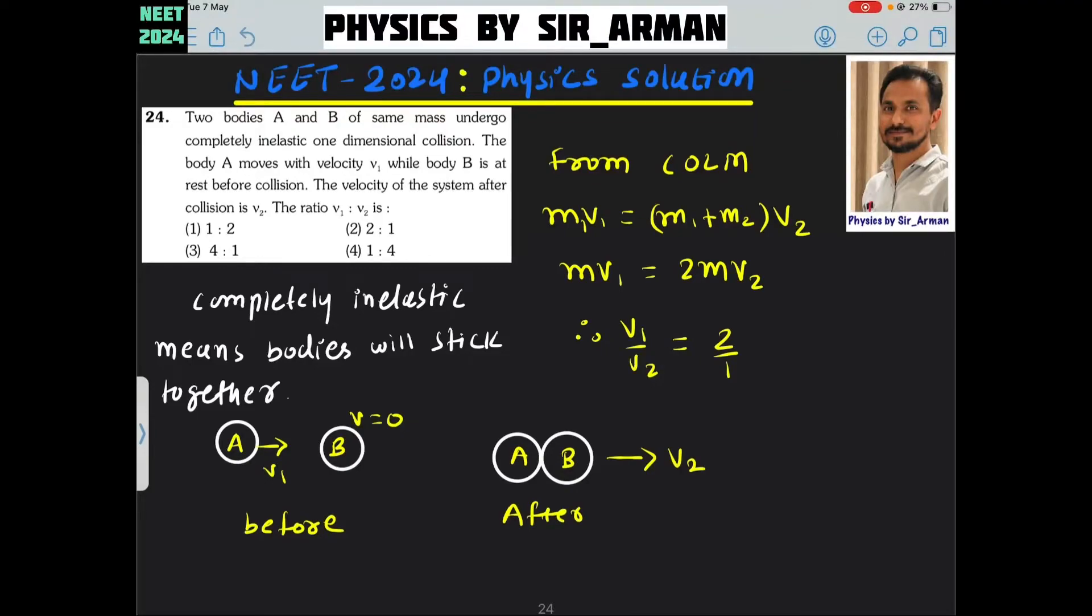Question number 24. Two bodies A and B of same mass undergo completely inelastic one-dimensional collision. When the term completely inelastic is given, it means the bodies will stick together.